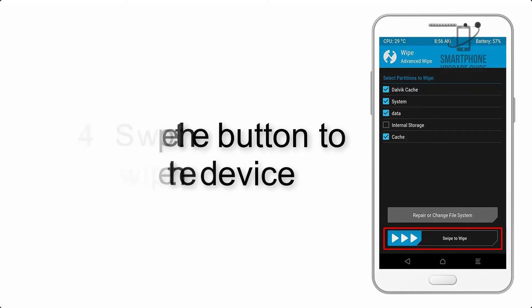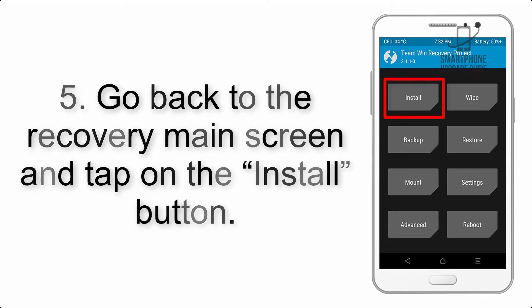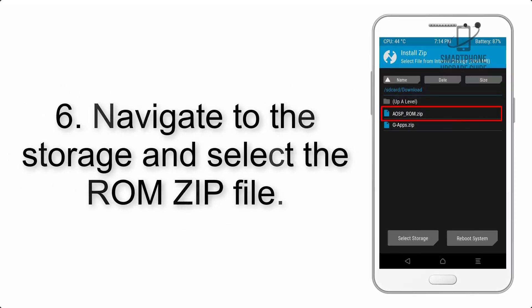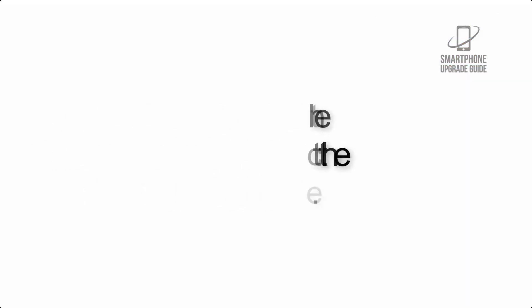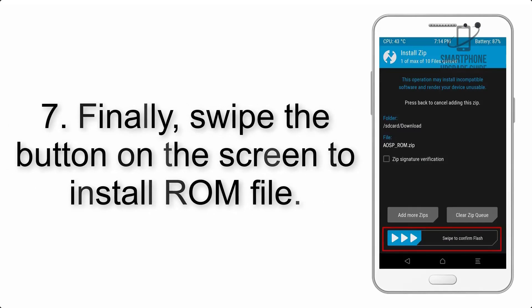Step 4: Swipe the button to wipe the device. Step 5: Go back to the recovery main screen and tap on the Install button. Step 6: Navigate to the storage and select the ROM zip file.